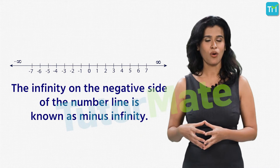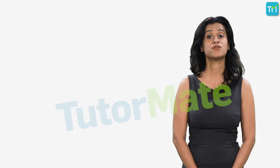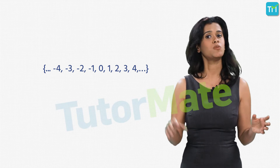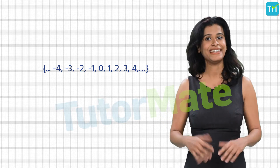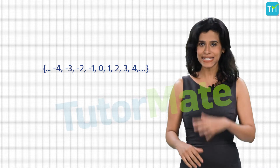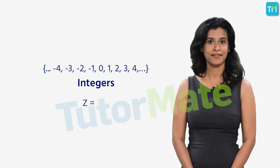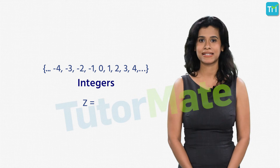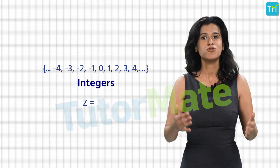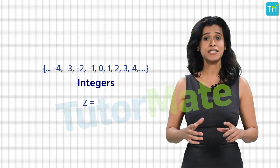Like the positive set, negative numbers also go on till infinity but on the negative side of the number line — known as minus infinity. When we include these negative numbers in our set of whole numbers, we get an entire set from minus infinity to minus 1, then 0, then all positive numbers from 1 to plus infinity. This new set is called integers, and we denote it by the capital letter Z. Z = {..., -4, -3, -2, -1, 0, 1, 2, 3, ...}. Our set of numbers keeps getting bigger and bigger — and there's still more to add!